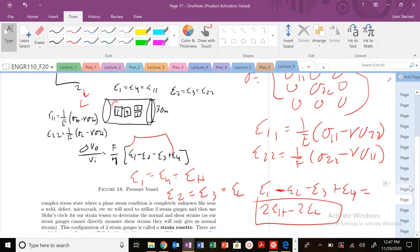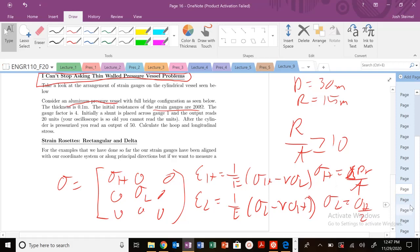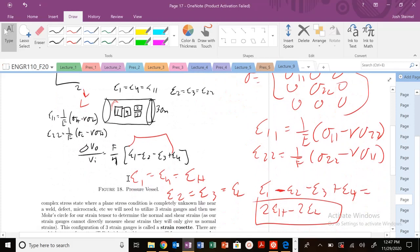We will use that in order to solve this expression. Let's go ahead and see what the problem is actually asking us to do. You can see how we're approaching this problem: write everything out, look at your strain gauges. Where are they measuring? Are they measuring in the hoop or the longitudinal?